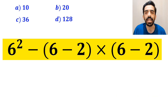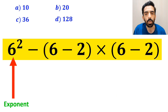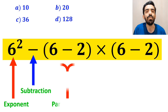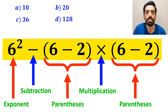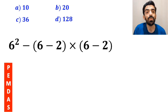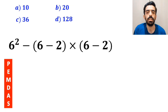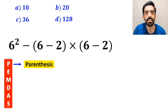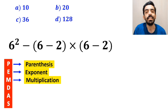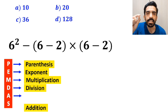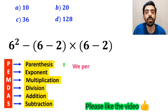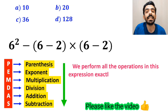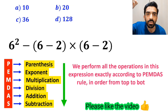As you can see in the image, this expression has an exponent, then a subtraction sign, then parentheses, a multiplication sign, and another parenthesis. To solve this, we must strictly follow the PEMDAS rule: P for Parentheses, E for Exponents, M for Multiplication, D for Division, A for Addition, and S for Subtraction — performed in order from top to bottom.